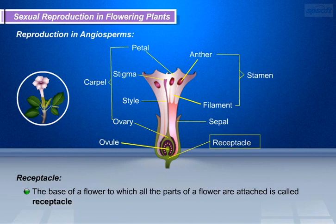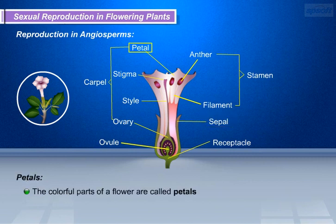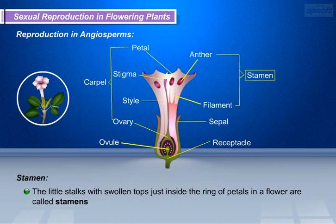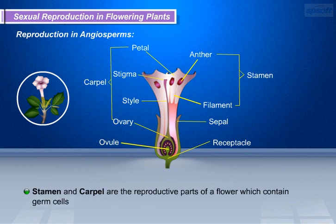The base of a flower to which all the parts of a flower are attached is called receptacle. Sepals are the green leaf-like parts in the outermost circle of a flower. Petals are the colorful parts of a flower. Stamens are the little stalks with swollen tops just inside the ring of petals. In the center of a flower, there is a flask-shaped organ called carpel. Stamen and carpel are the reproductive parts of a flower which contain germ cells.